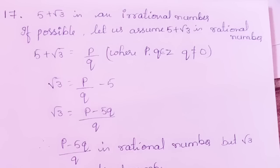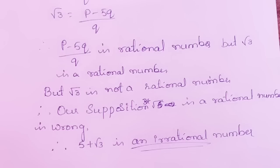Seventeenth question: show that 5 + √3 is an irrational number. Let us assume 5 + √3 is rational, so 5 + √3 = p/q where p, q ∈ Z and q ≠ 0. Then √3 = (p − 5q)/q, which would make √3 rational. But √3 is not rational — this is a contradiction. Therefore, our assumption is wrong and 5 + √3 is an irrational number.